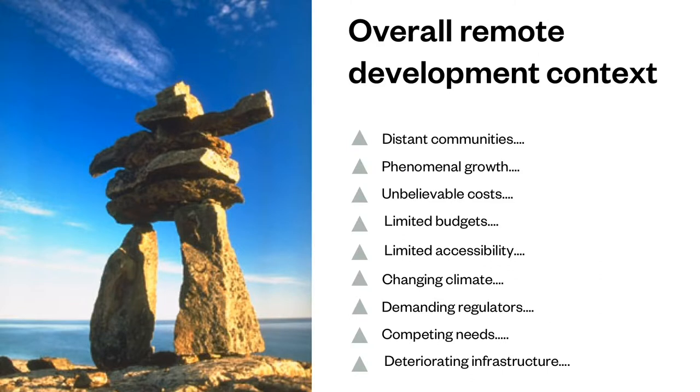The overall remote development context includes distant communities, phenomenal growth, unbelievable costs, very limited budgets, limited accessibility, changing climate, demanding regulators, competing needs, and deteriorating infrastructure. Talking about distant communities — the communities of the Canadian Arctic are quite distant, and quite often there's no road access between communities. They are limited to aircraft access, and in some cases that's the only year-round access. In Nunavut, the only way to get heavy construction equipment in is once a year with the annual sea lift after the sea ice has melted.